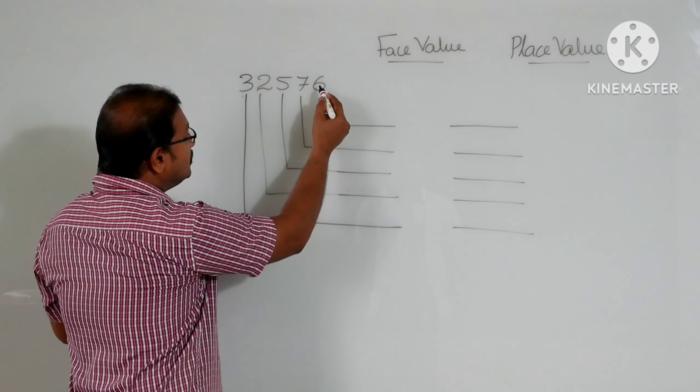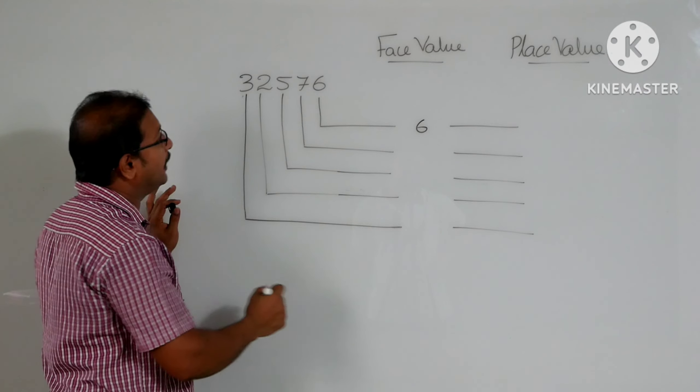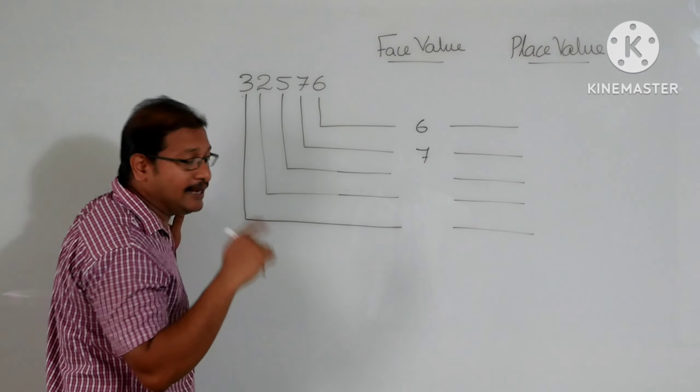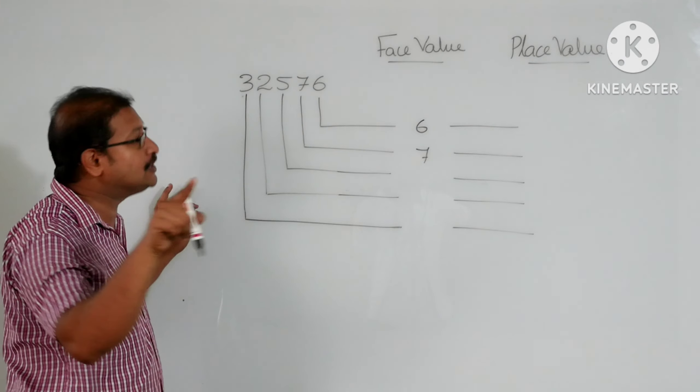We know that 6 has the face value 6. Again, 7 has the face value 7. That means what you can see, the direct digit, that is directly called face value.